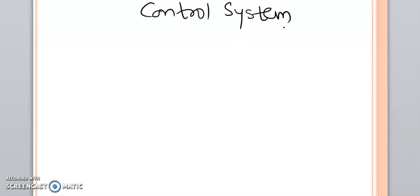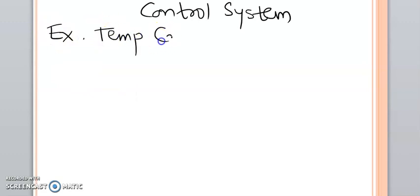Along with that there are other control systems which are going to control position, velocity, pressure, temperature, voltage, current, and like quantities. So all these are called control systems. To understand this concept we will go through a basic example — a simple example of a temperature controller of a room.